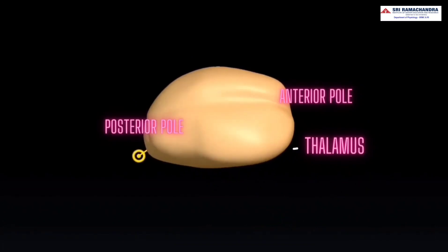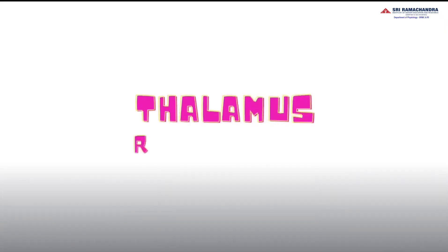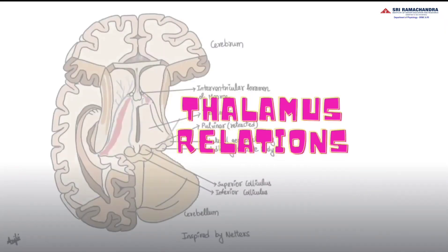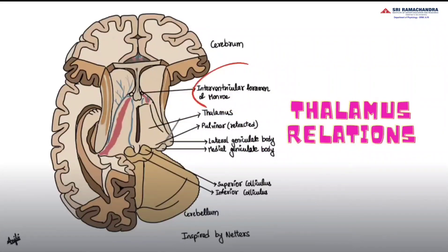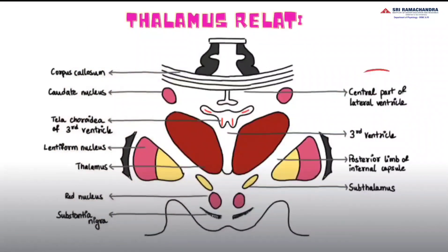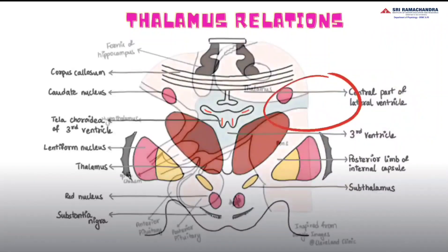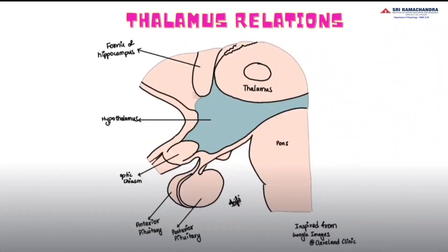It has two poles — anterior and posterior — and four surfaces. Its relations are: anteriorly, it is situated behind the interventricular foramen of Monro; posteriorly, it is situated in front of the superior colliculi and the pulvinus; superiorly, it forms the floor of the central part of the lateral ventricle; and antero-inferiorly, it is related to the hypothalamus.